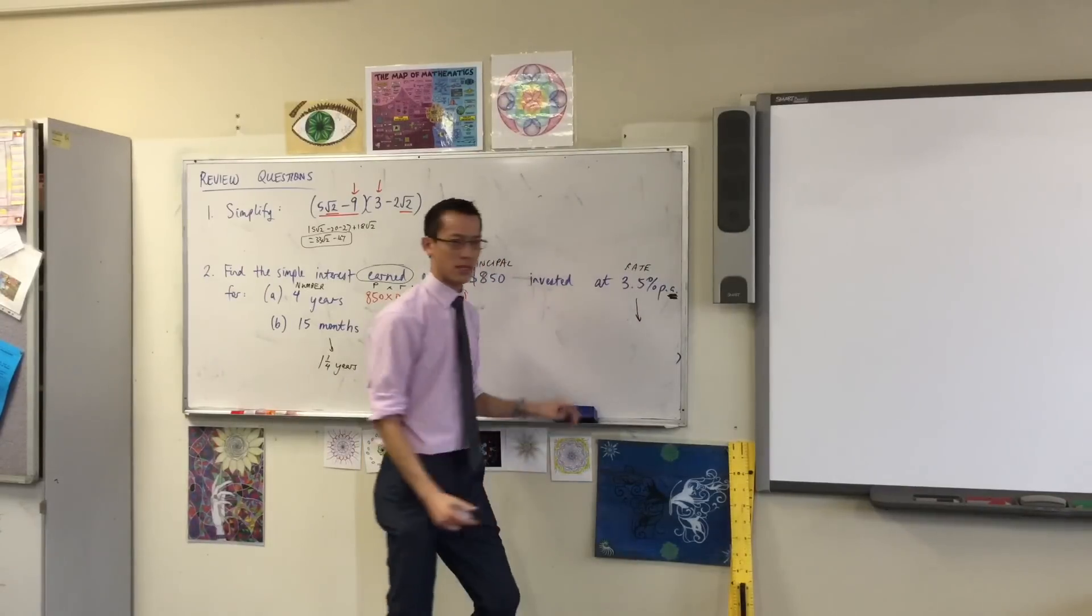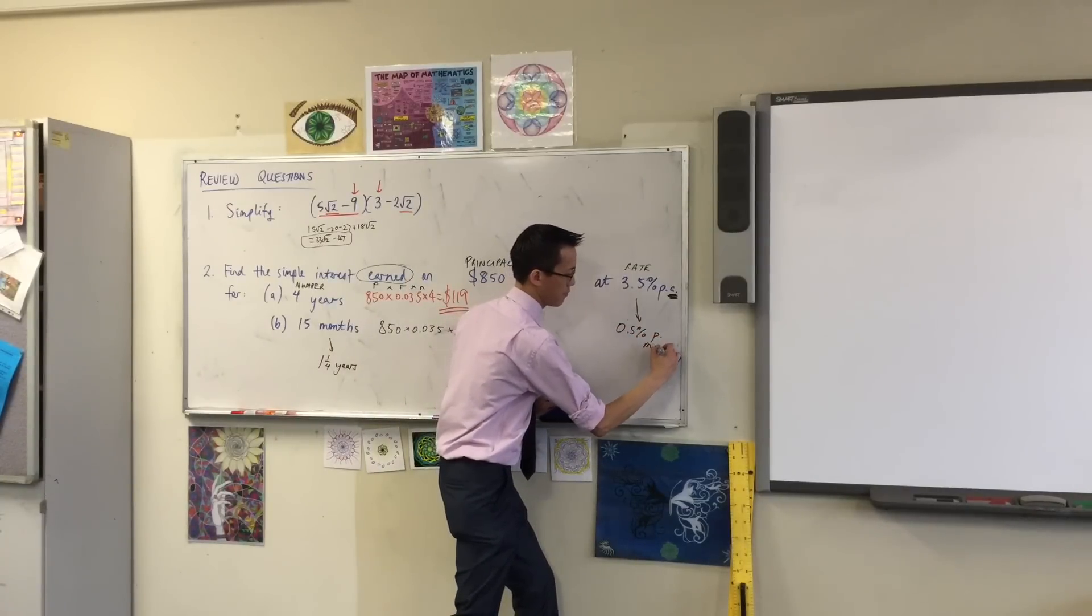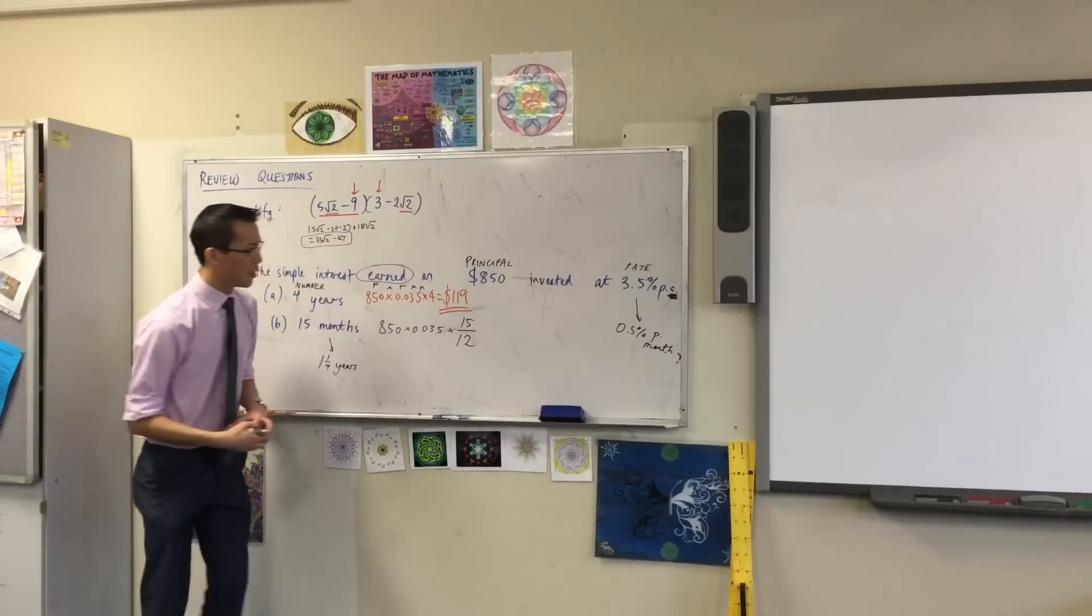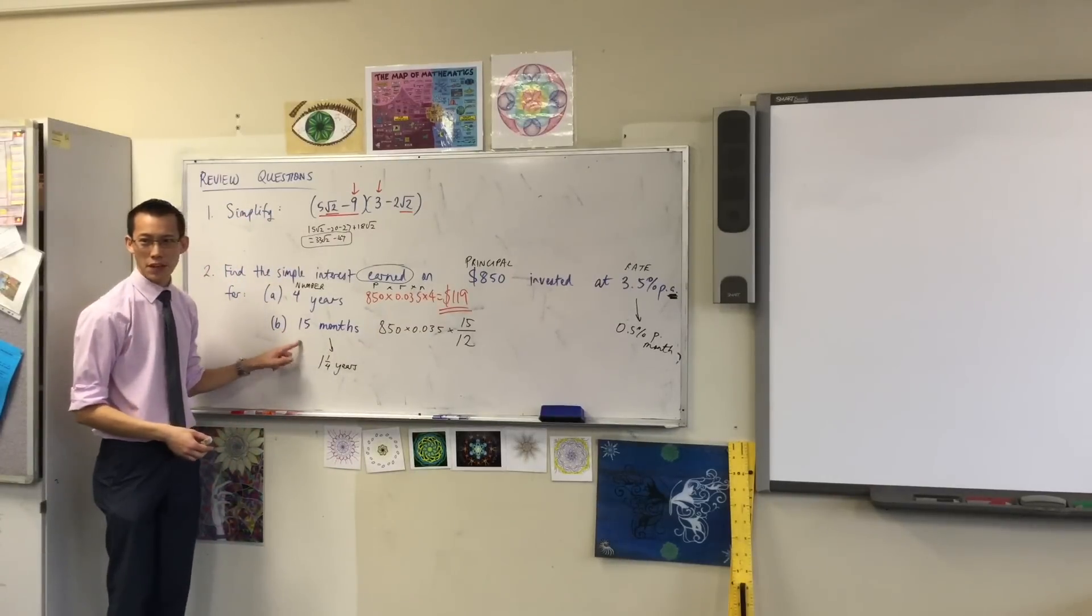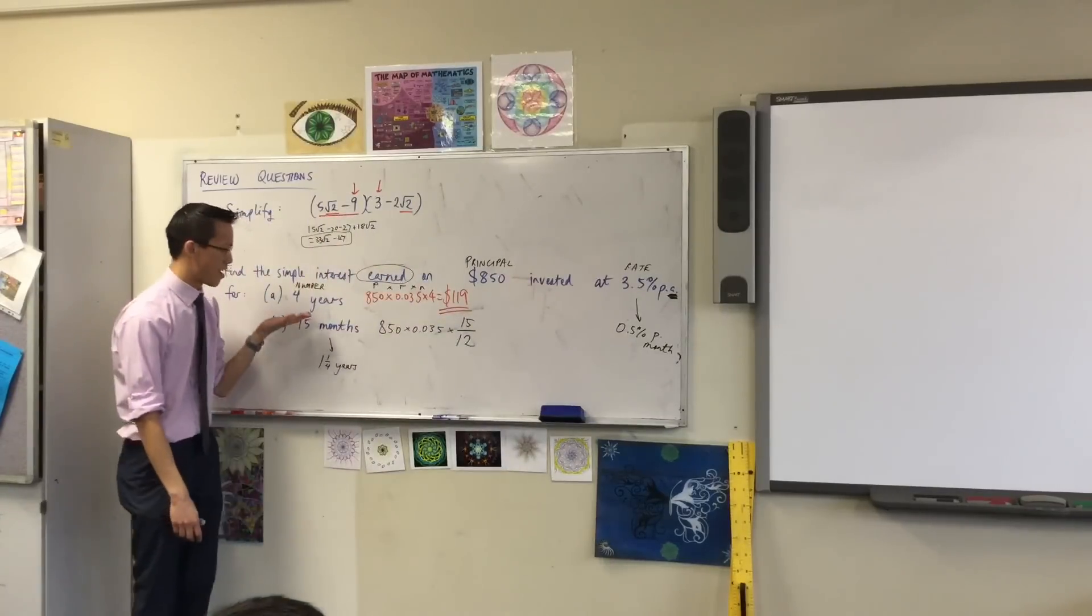So even though it's just two tiny letters, they make a difference. I could have changed this question to be something else, like say, I don't know, 0.5% per month. If that were the case, this question is gonna be quite different, isn't it? What would I do here if I got 15 months? I don't need to change that, do I? The interest rate is in months, the time period's in months, it's all good.